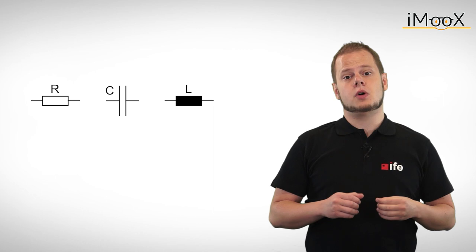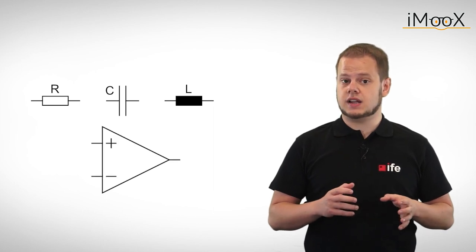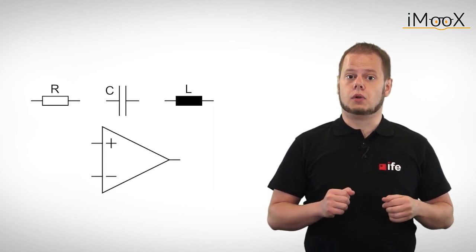Fortunately resistors, capacitors, inductors and even operational amplifiers to some extent have a linear current voltage relation.